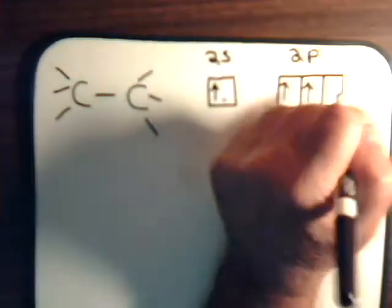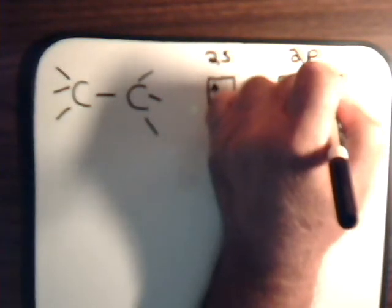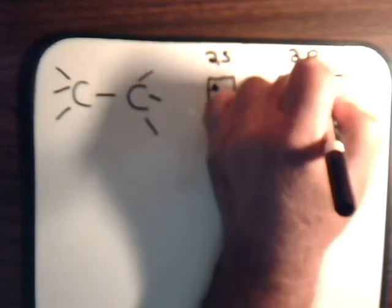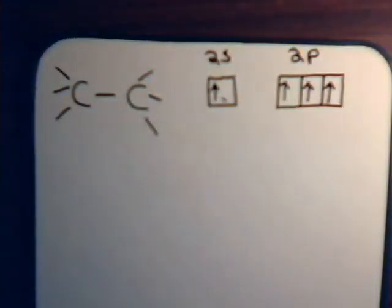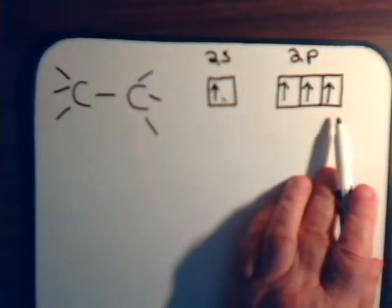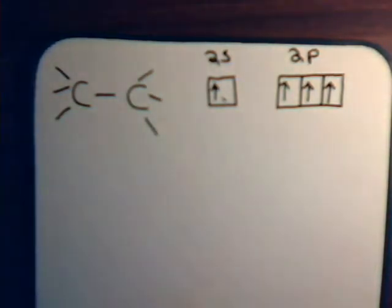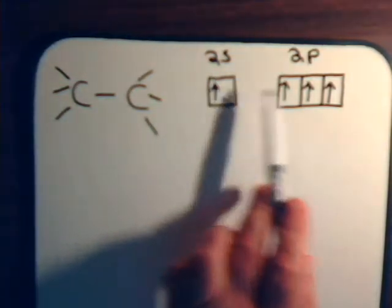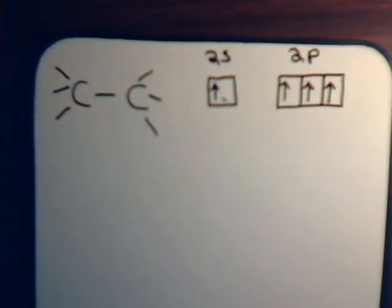So, the block diagram looks like this now. That requires energy to do that, but the bonds that we can make as a result of doing that more than compensates for the energy that it takes to promote an electron from the 2s orbital up to the 2p orbital.